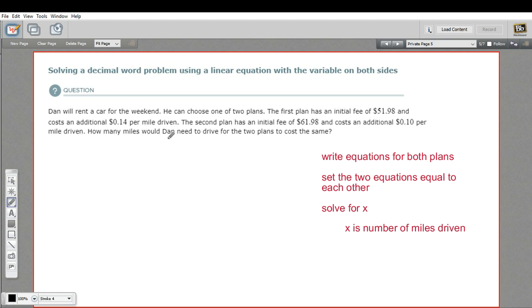If we wanted to know the total cost - I'm going to call that C - of the first plan, it would be the number of miles driven times that 14 cents, so 0.14 times X. Remember, X is the number of miles driven, plus that $51.98 you paid up front. Here's our constant part and here's the part that changes with the number of miles, and that's going to be your total cost.